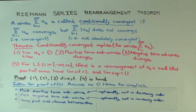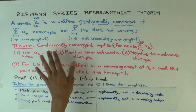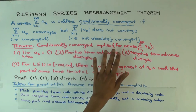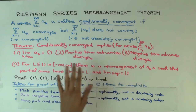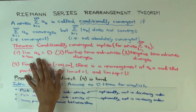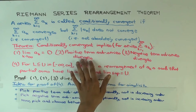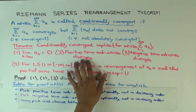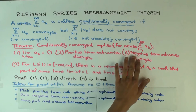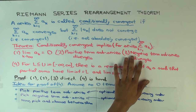If a series is conditionally convergent, then there are three things we know: the terms have to go to zero, the sub-series of positive terms diverges, and the sub-series of negative terms diverges.